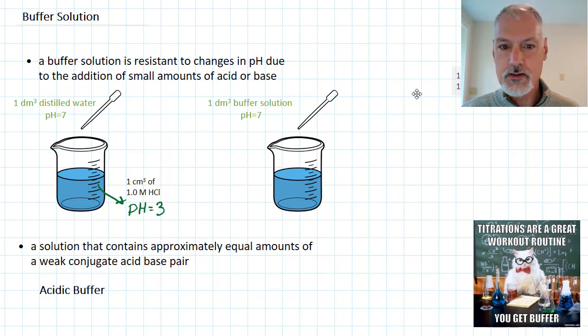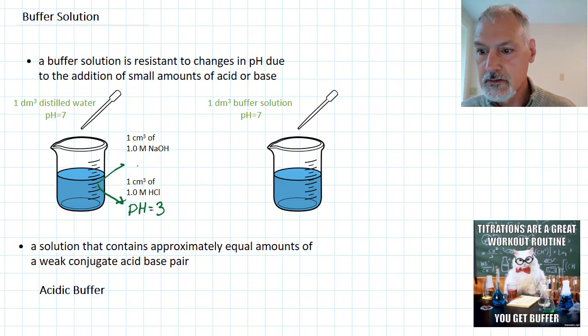Similarly, if I add a very strong base to the situation, some sodium hydroxide, I would finish up with a solution whose pH would be somewhere about 11. Again, a change of about 4 pH units to the addition of 1 cubic centimeter.